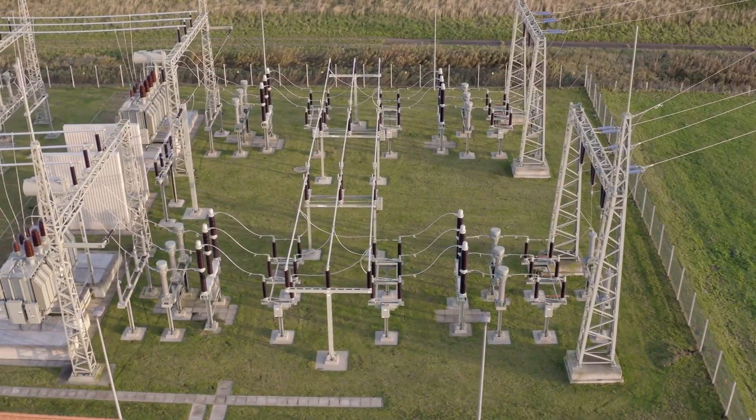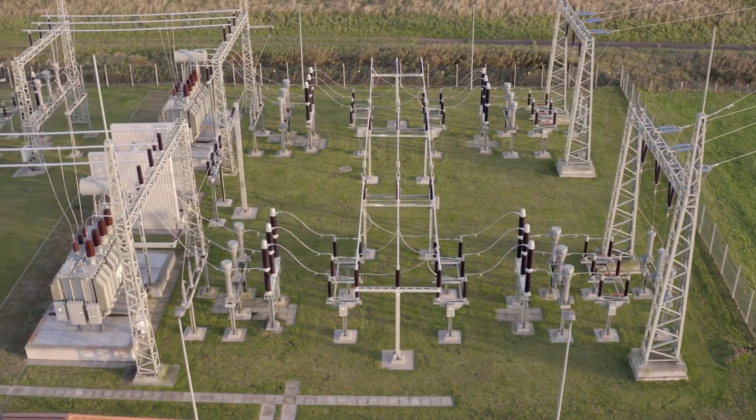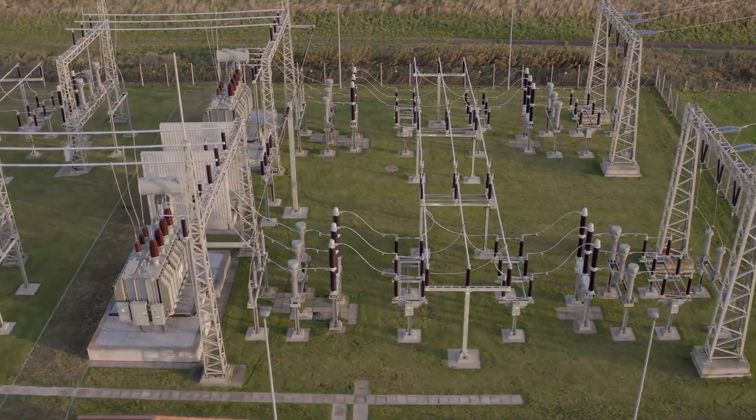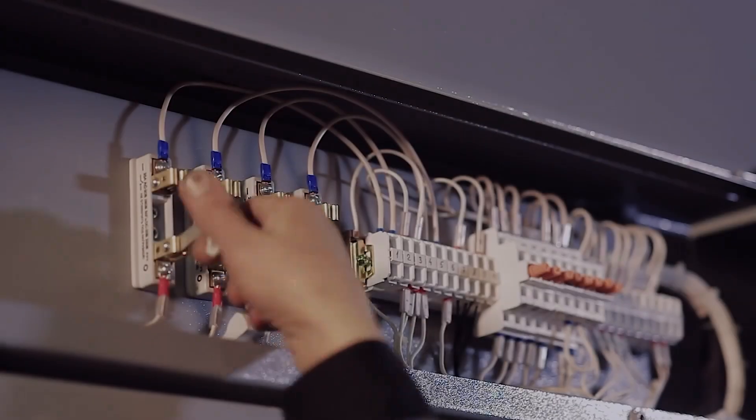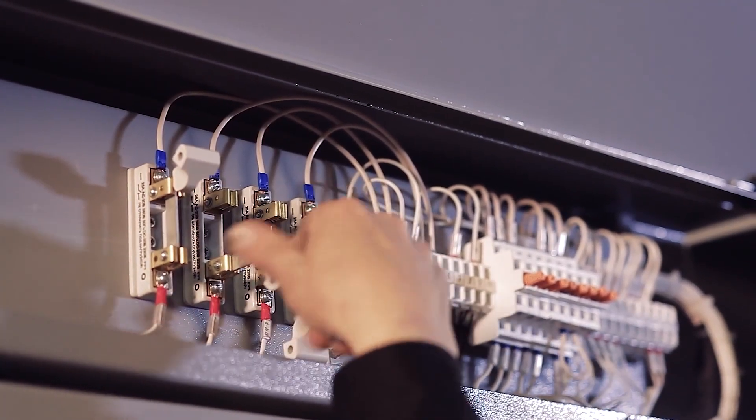While lightning is often thought of as the main culprit of surges, it's much more common to have surges as a result of switching. Some of the typical causes of switching transients include capacitor bank switching, power grid faults, and load changes.